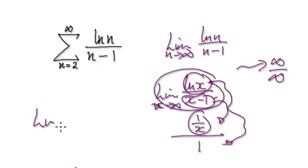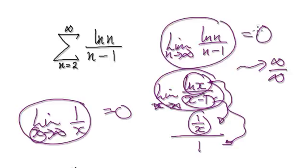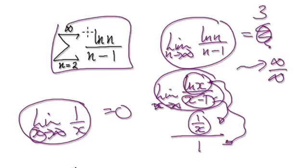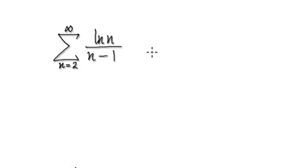So the limit of this equals the limit of one over x as x tends to infinity, which heads towards zero. So the limit equals zero. If it's anything other than zero — say if it's three — then we can immediately be 100% sure it's going to diverge. But because it's zero, it's indeterminate: it could still converge or still diverge.